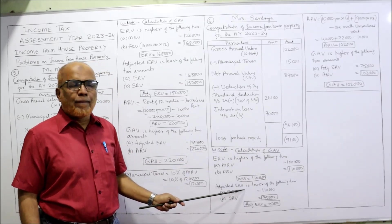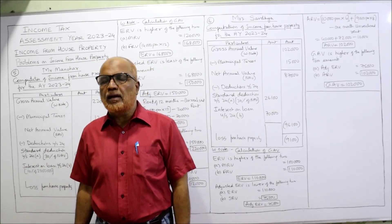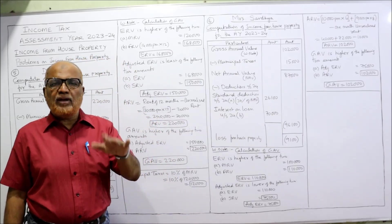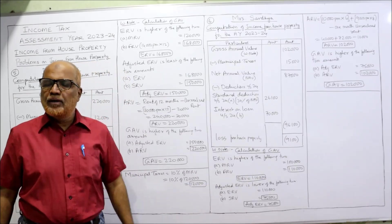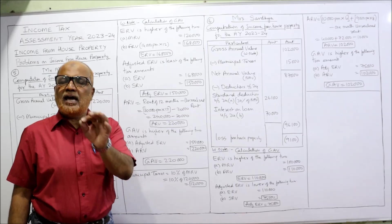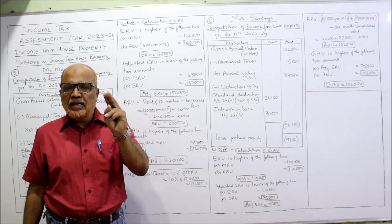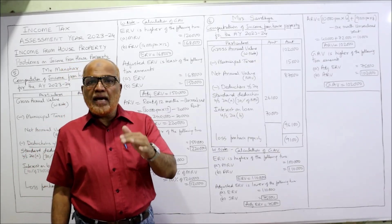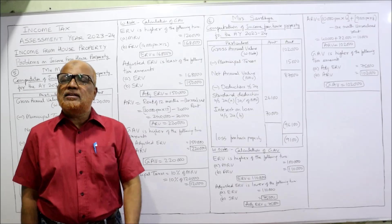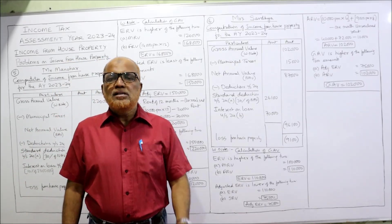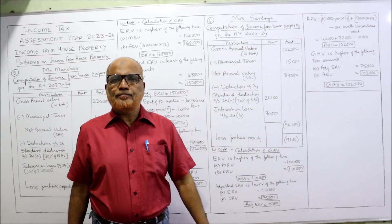Since the house is governed by the Rent Control Act, we must also calculate adjusted ERV. ERV is the higher of MRV and FRV: MRV is 1,00,000 and FRV is 1,10,000, so higher is 1,10,000 — that is the ERV. Now adjusted ERV is the lower of ERV or SRV: ERV is 1,10,000 and standard rental value is 75,000. Whichever is lower — 75,000 — is the adjusted ERV.